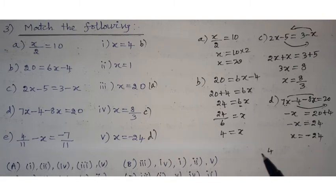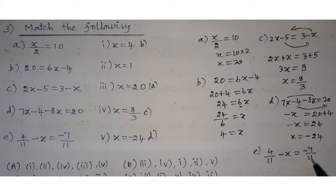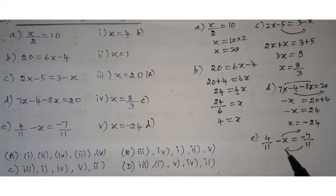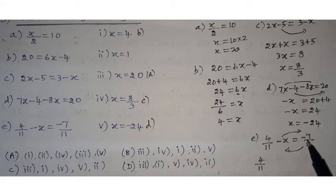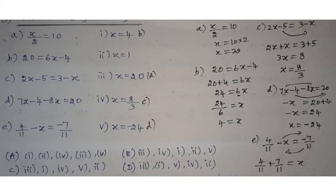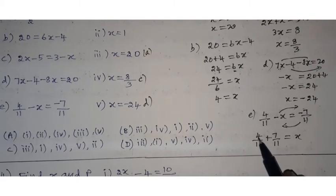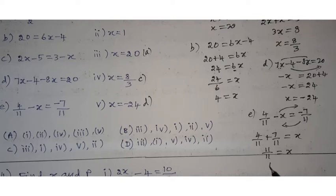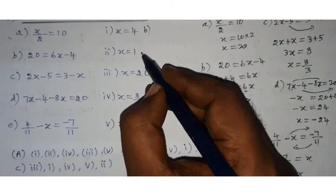Finally, 4 by 11 minus x equals minus 7 by 11. Bring minus x to the other side as plus x. Bring minus 7 by 11 to this side as plus 7 by 11. So 4 by 11 plus 7 by 11 equals x. Same denominator, so add numerators: 11 by 11 equals 1. Therefore x equals 1, which is option E.